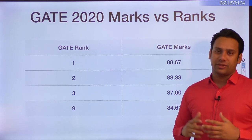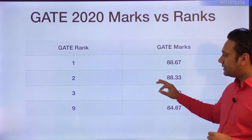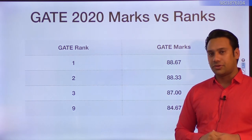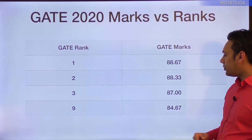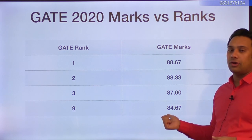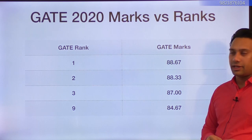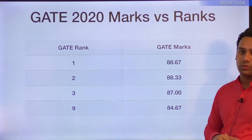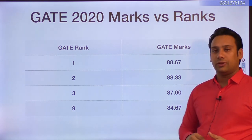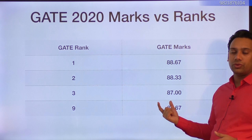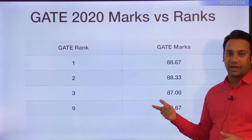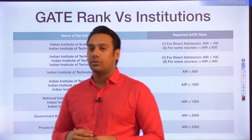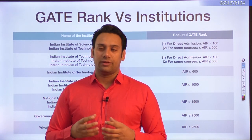In GATE 2020, the marks of the top 10 rankers were: to get rank 1 you needed 88.67 marks out of 100, and rank 9 required 84.67 marks out of 100. This gives you a clear idea of how much you need to score to get into the top 10 ranks.